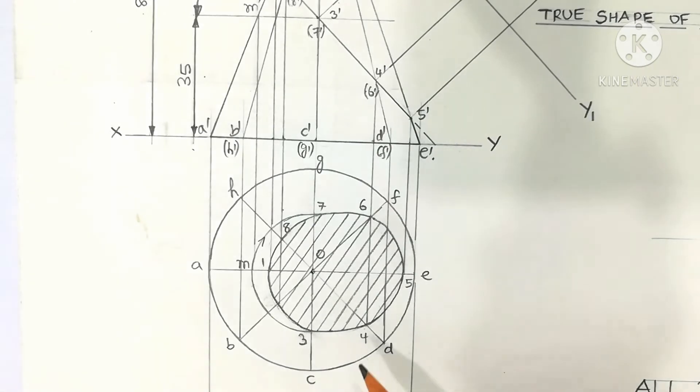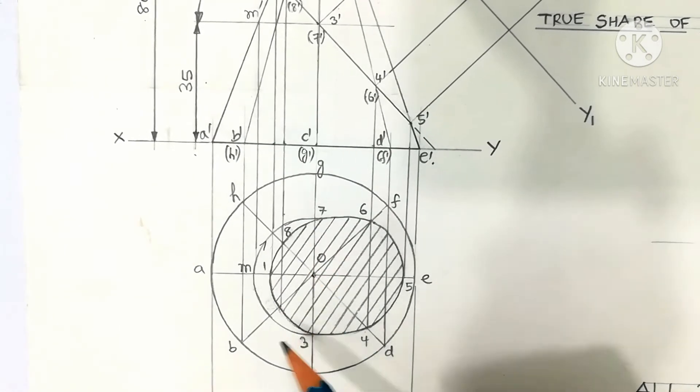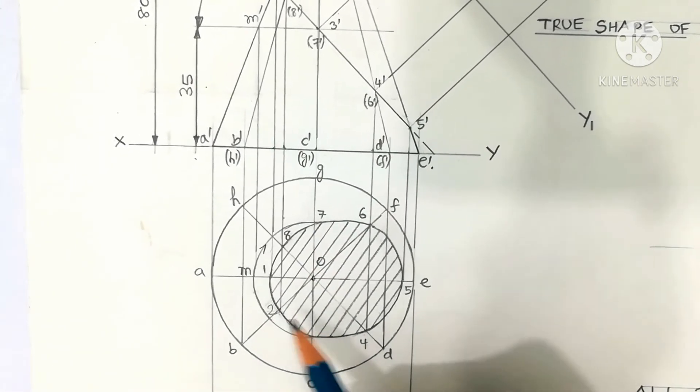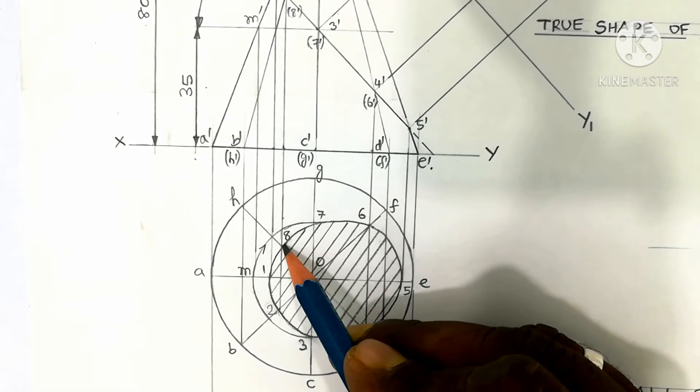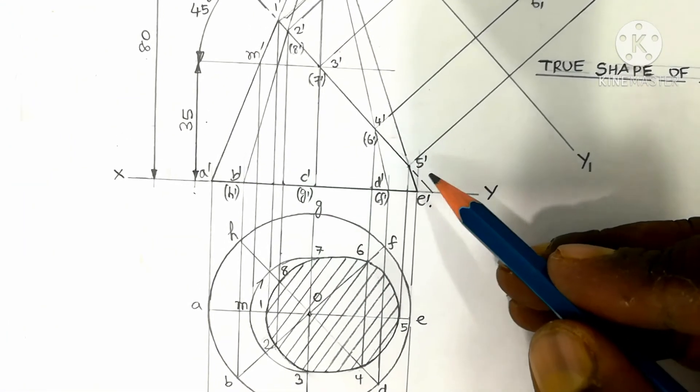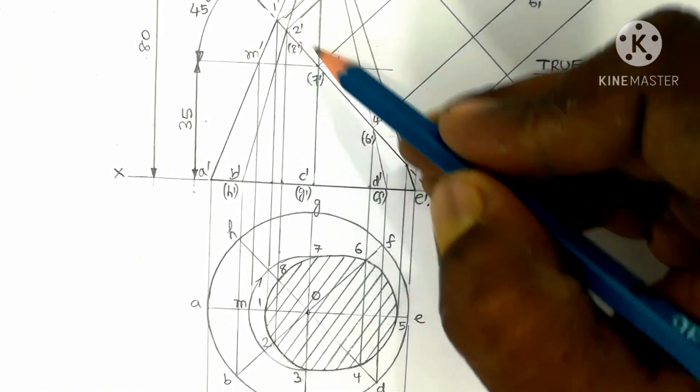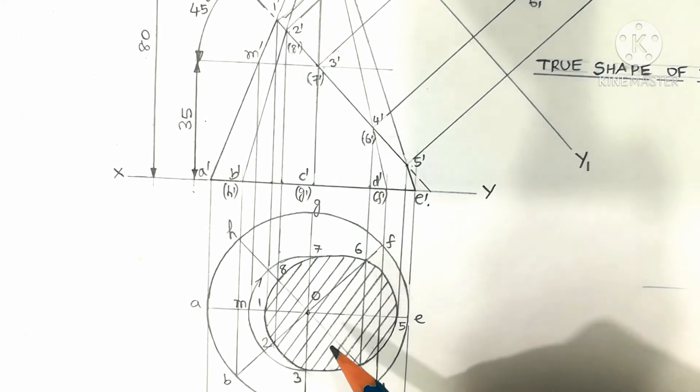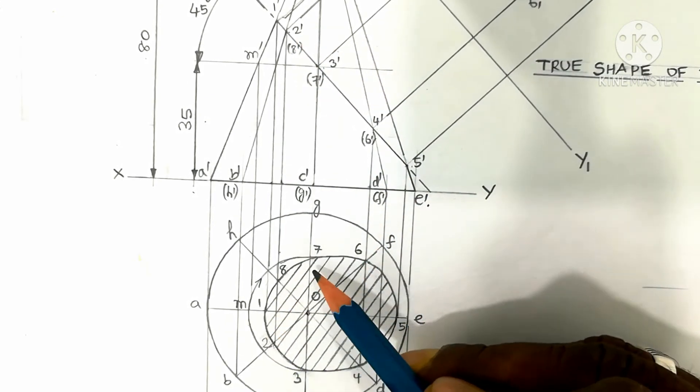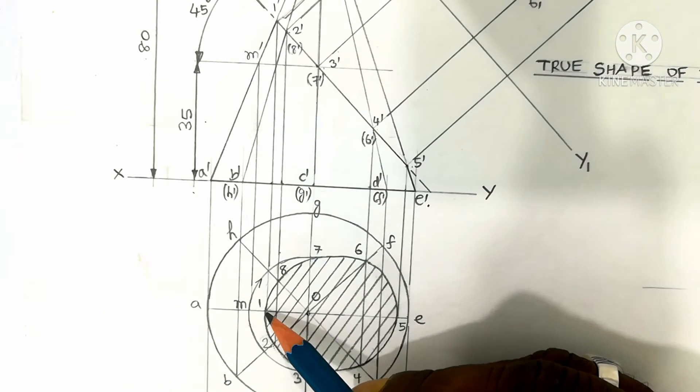This ellipse is marked with points 1, 2, 3, 4, 5, 6, 7, 8. The cutting plane points are marked as 1 dash, 2 dash, 3 dash, 4 dash, 5 dash, 6 dash, 7 dash, 8 dash. These points are also marked in the top view.